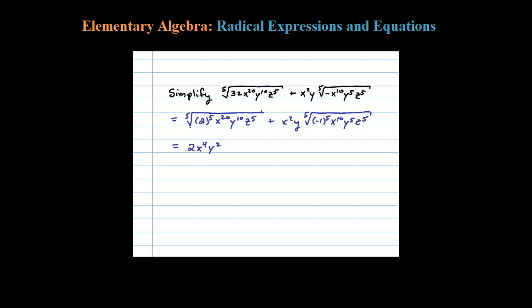And then finally Z to the fifth - 5 goes into 5 one time perfectly, so Z. The fifth root of Z to the fifth is Z, plus...